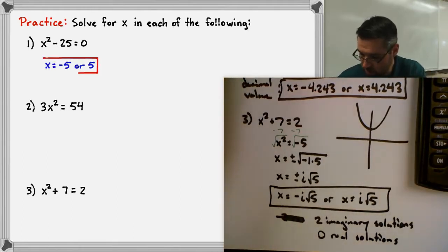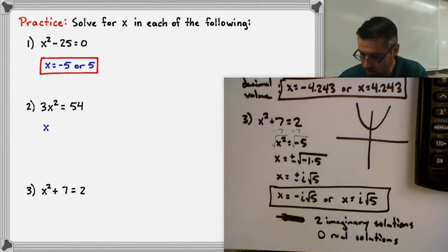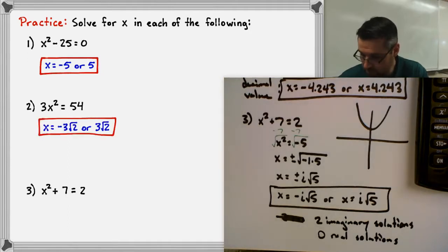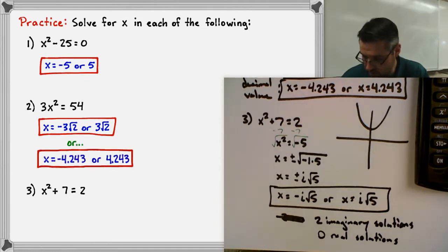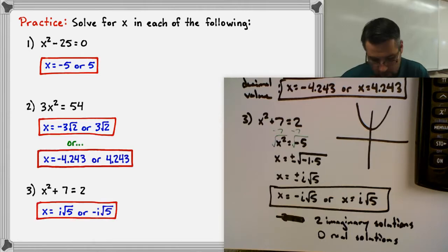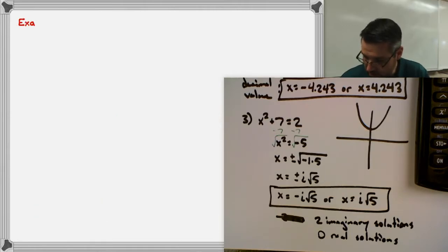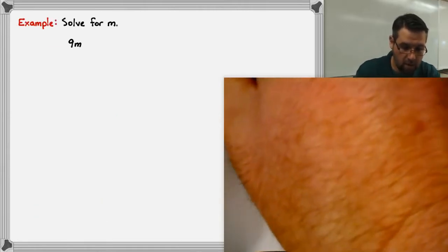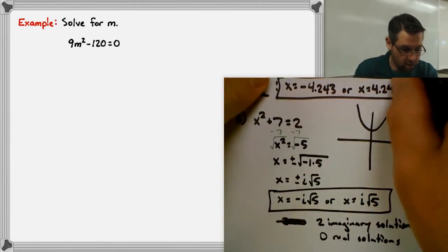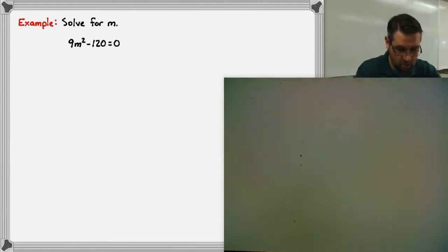Let's double-check the answers: problem one gave plus or minus five; problem two gave negative three radical two and positive three radical two, or in decimal form negative 4.243 and 4.243; and the last one was i radical five or negative i radical five.